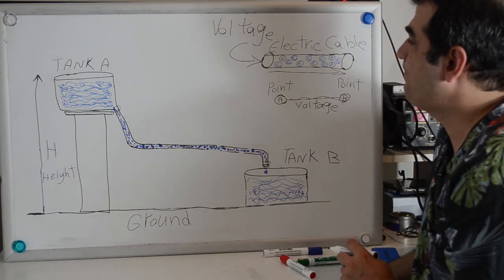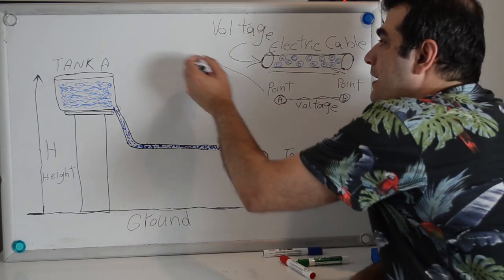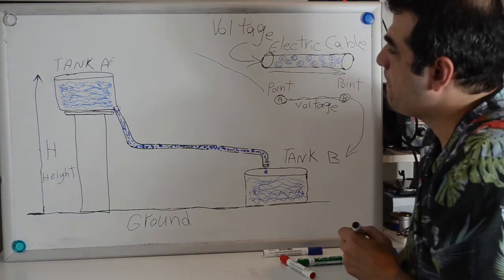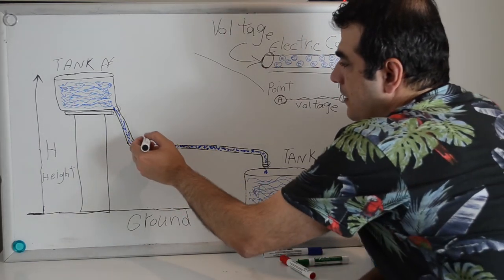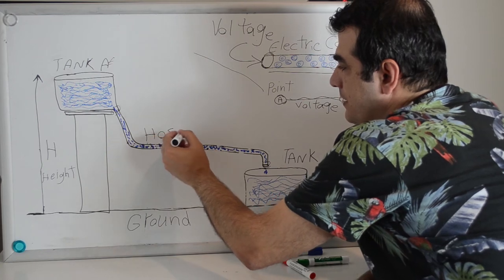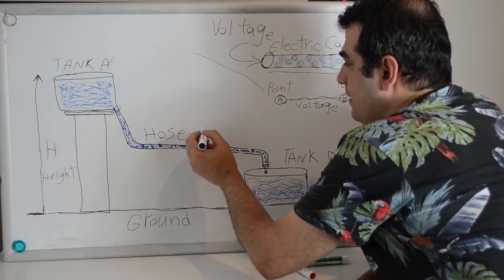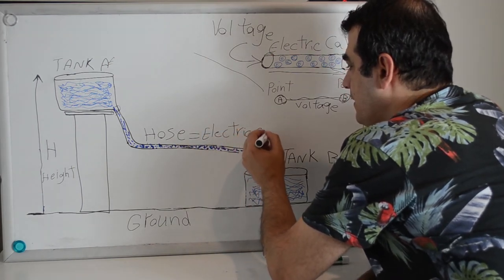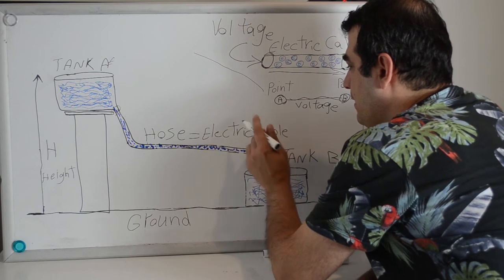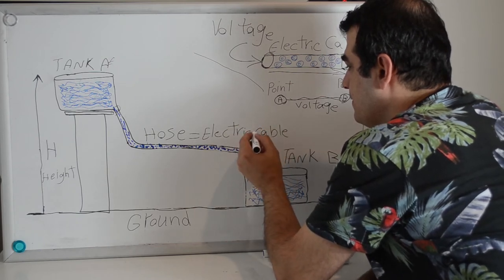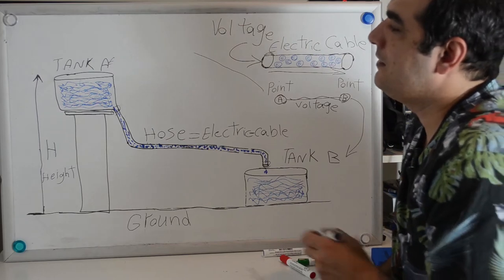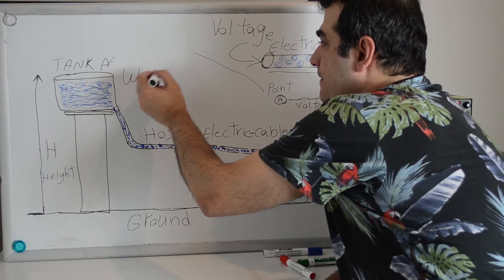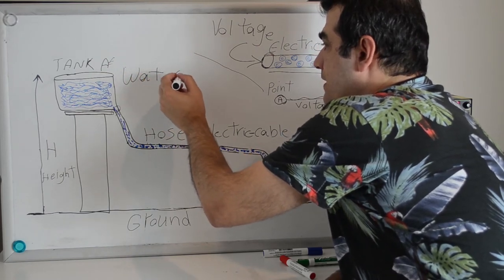Suppose point A is Tank A and point B is Tank B. The hose is the same as an electric cable, and inside the tank the water is the same as electrons.